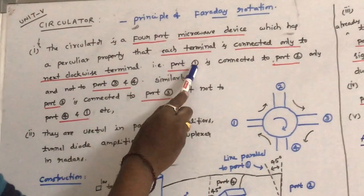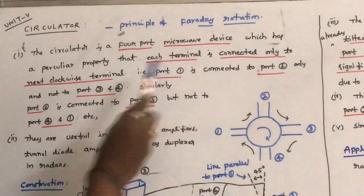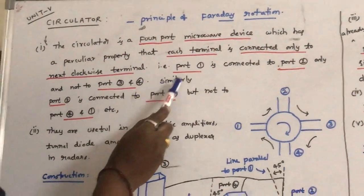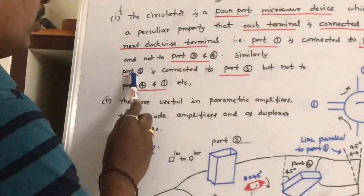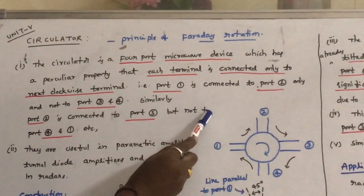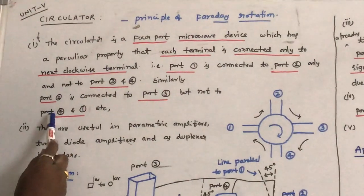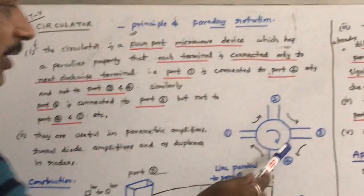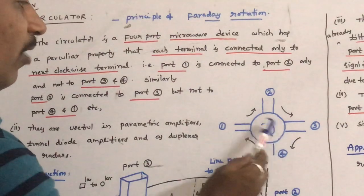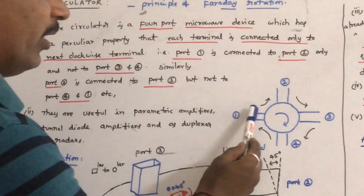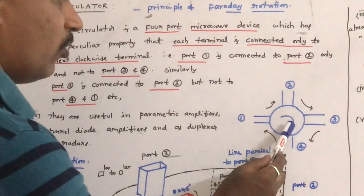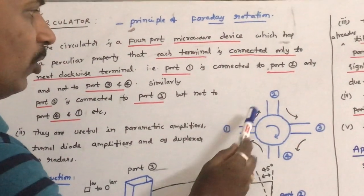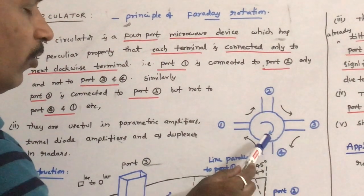Port 1 is connected to port 2 only, but not to port 3 and 4. Similarly, port 2 is connected to port 3, but not to port 4 and port 1. This is the 4-port circulator shown in the clockwise direction, with port 1, port 2, port 3, and port 4.